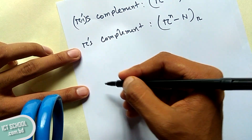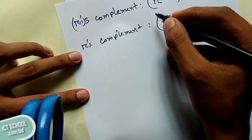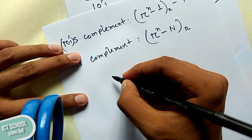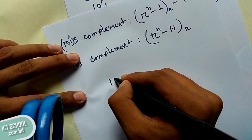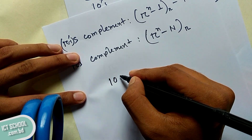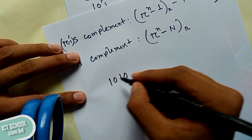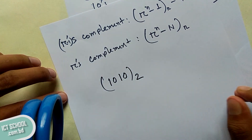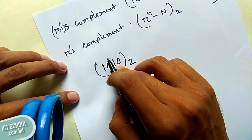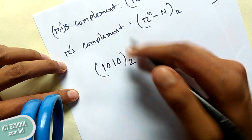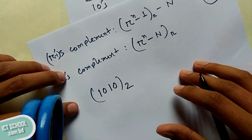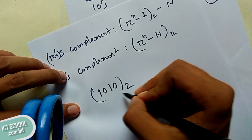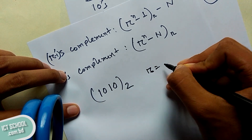The 1s complement was the base, which is the base, and the base. The 1s complement is the base — 1-0-1-0 — this 1s complement is a base 2 number, which is the 2s complement. 1s complement is the base, and the base.